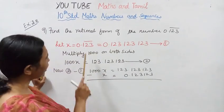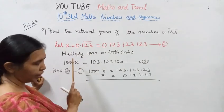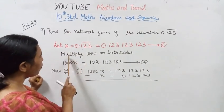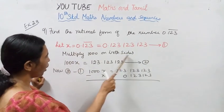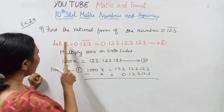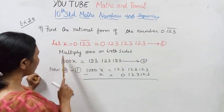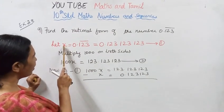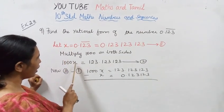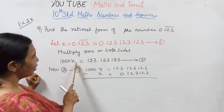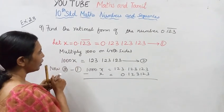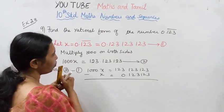The decimal point has 3 digits after it. Multiplying 1000 on both sides. Now here we have 1000x on both sides.